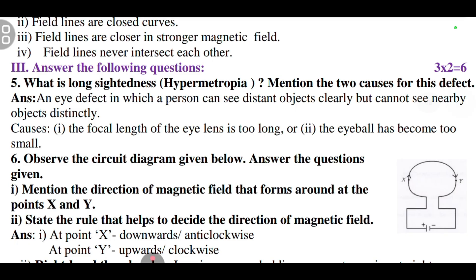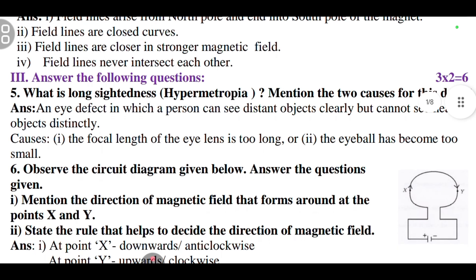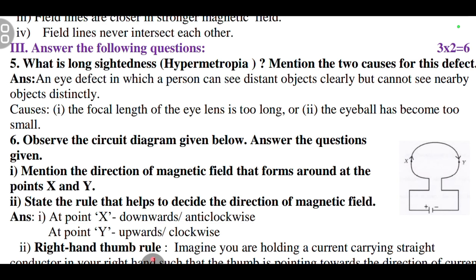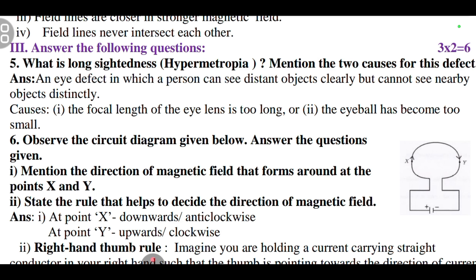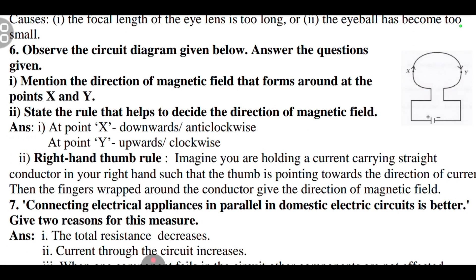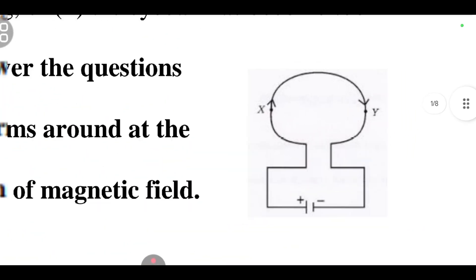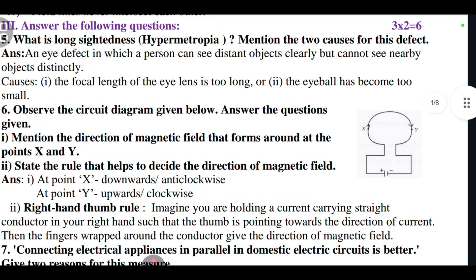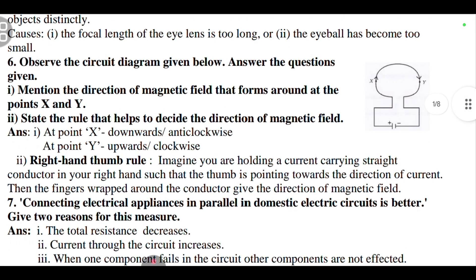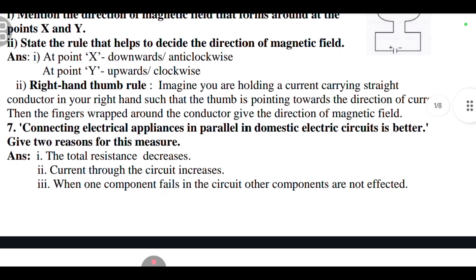I am not reading the answers because this video will be consumed in more time. Coming to the third section, answer the following question. What is long-sightedness (hypermetropia)? Sometimes they will not give in the bracket hypermetropia. We should understand that it is hypermetropia. Mention the two causes for the defect. And coming to the sixth question, observe the circuit diagram given below and answer the questions.